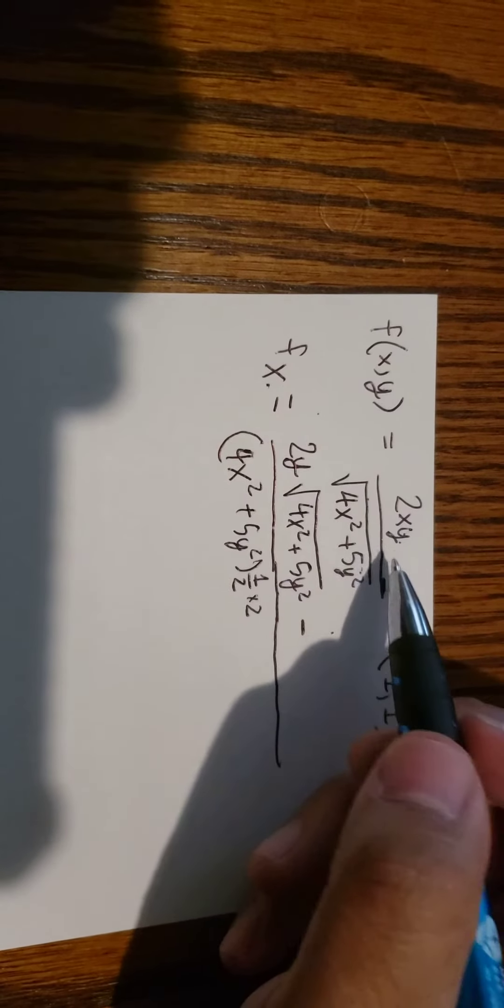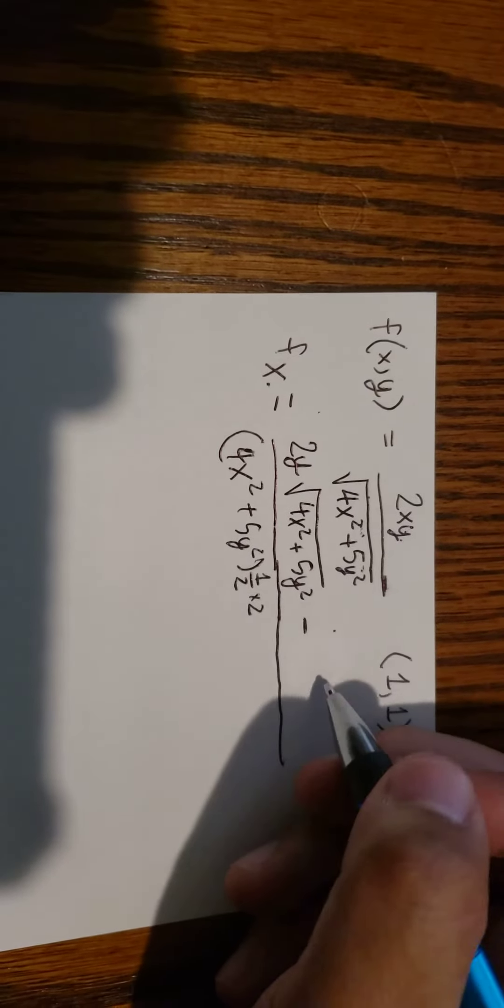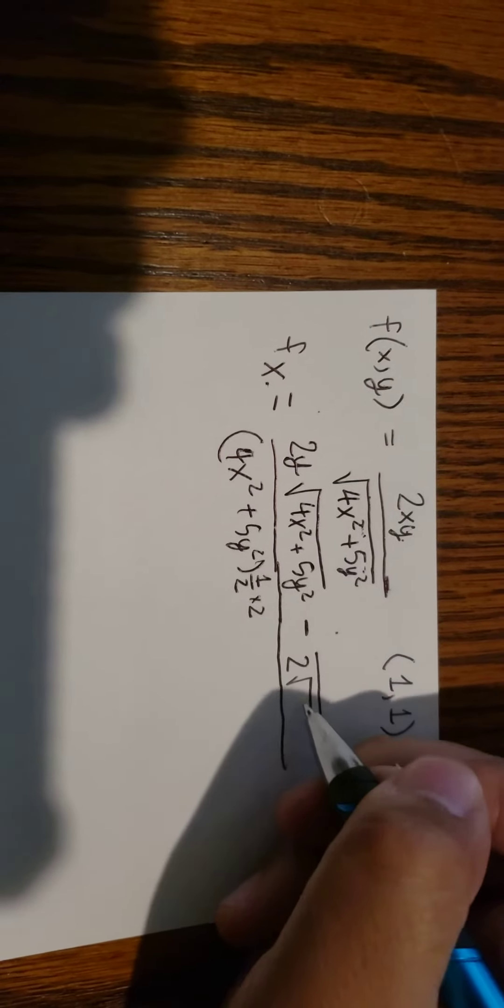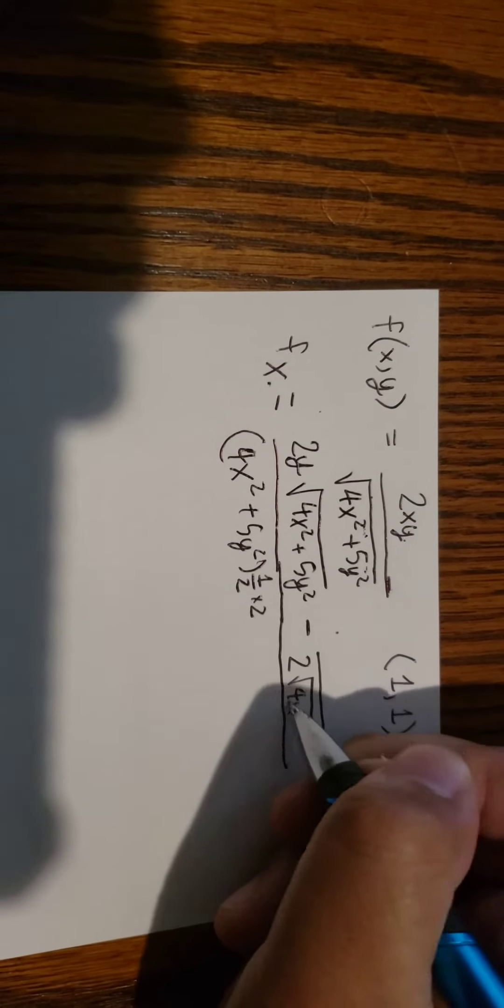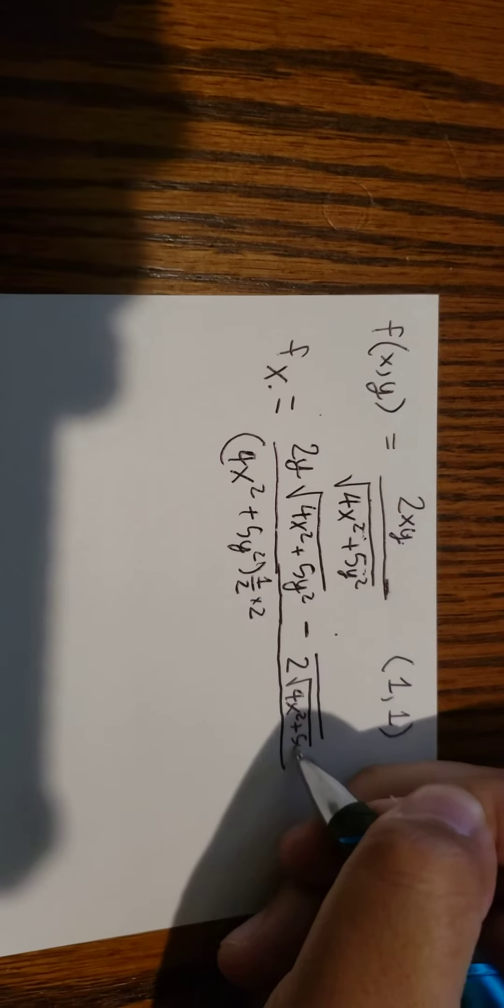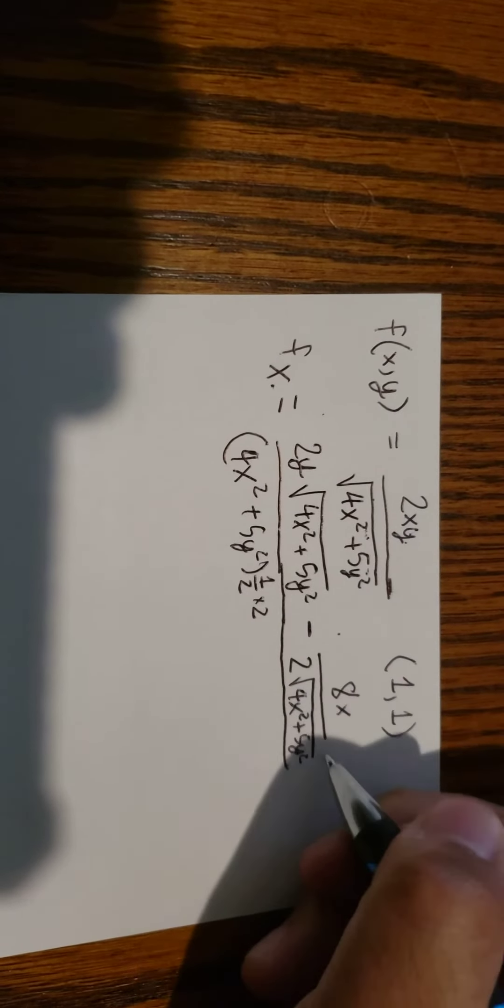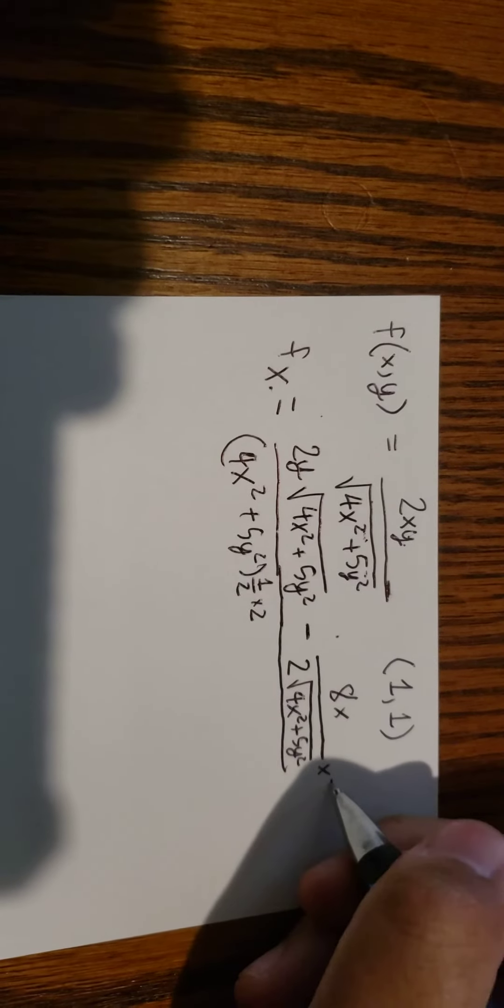We do first derivative of this one. You will get 2 multiply with the square root of x square plus 5y square. And we have 8x multiply with 2xy.